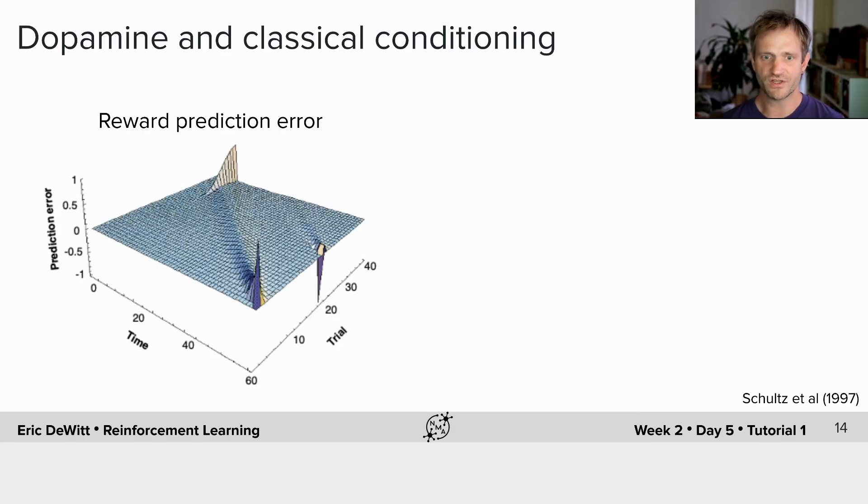If we were to think about this during learning, we can plot the 3D space of the reward prediction error. So plotted along this axis is time, or states, as we're going to see in a second. And plotted along this axis is the number of the trial, or we could say in reinforcement learning terms, the episode number. At the beginning of learning, the reward prediction errors are at the end of the trial, and at the end of learning, the reward prediction errors occur at the beginning of the trial.